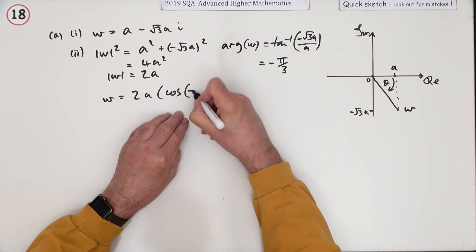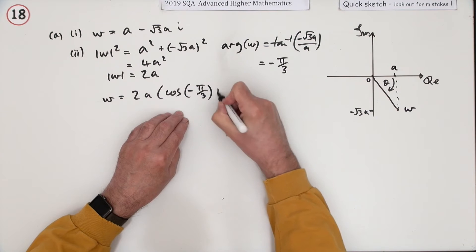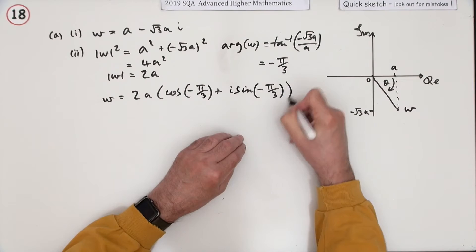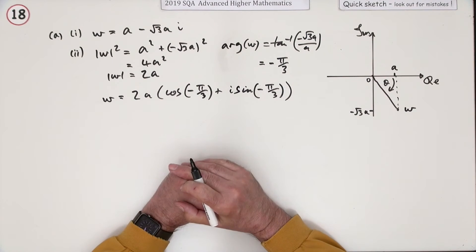Putting it together, w equals 2a, and then it's just the usual form: cos of negative pi upon 3 plus i sine negative pi upon 3. Now that could do as an answer.